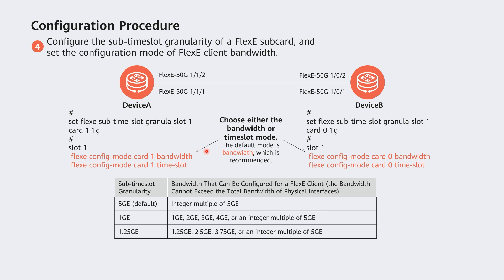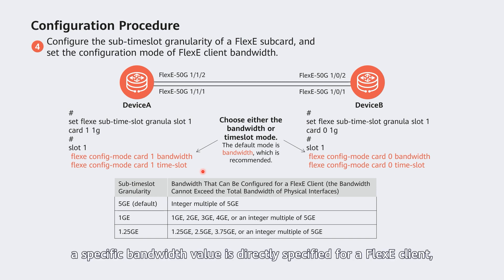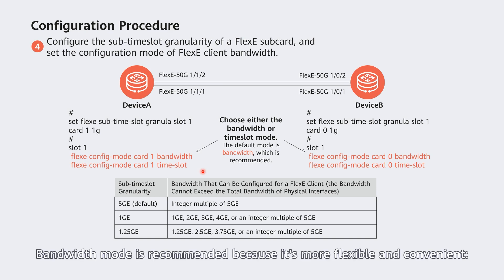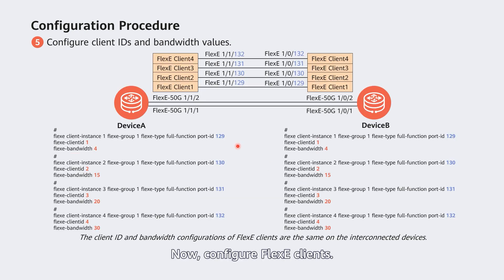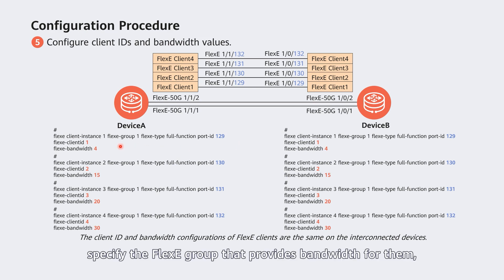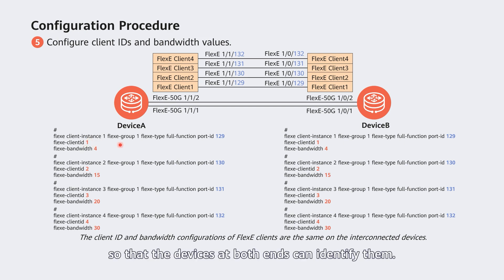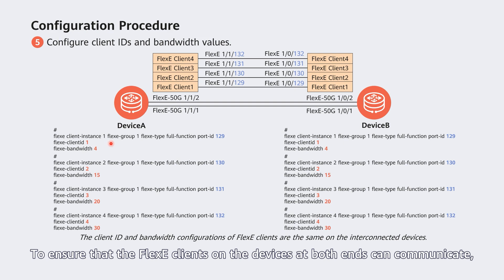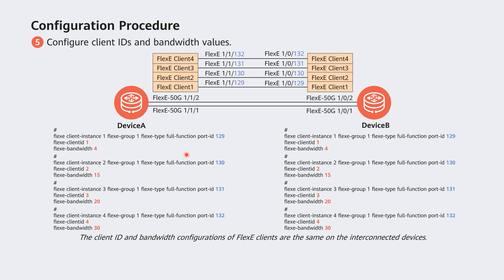Otherwise, the 4 Gbps bandwidth cannot be allocated. The configuration mode of flexi client bandwidth can be time slot binding or bandwidth. In time slot binding mode, a time slot number is directly specified for a flexi client to form a corresponding bandwidth. In bandwidth mode, a specific bandwidth value is directly specified for a flexi client and a time slot number is automatically allocated by the device. Bandwidth mode is recommended because it is more flexible and convenient, and it is the default mode. Now configure flexi clients: create flexi clients, specify the flexi group that provides bandwidth, specify flexi logical interface numbers, set bandwidth values, and configure client IDs so that devices at both ends can identify them. Configure the same ID and bandwidth value for flexi clients at both ends.